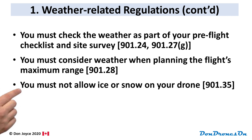And finally, given that it's Canada, you must not allow ice or snow on your drone. That's 901.35. They're not talking about a few snowflakes — they're talking about flying in situations where the aerodynamic capabilities of your drone are going to be compromised because of ice or icing conditions, or the weight and impact of snow on your drone.